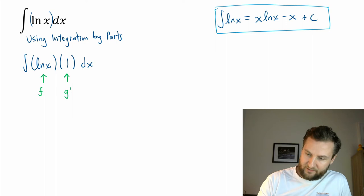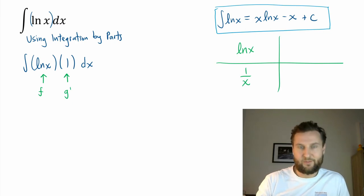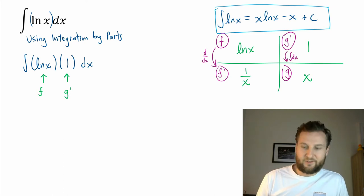So let's set up my matrix. In my first spot, I put f. Let's go ln x. And then the derivative is 1 over x. In my next spot, I put g prime. So this is going to be just 1. And then I need to integrate to get g. So what's the integral of 1? Well, it's just x.